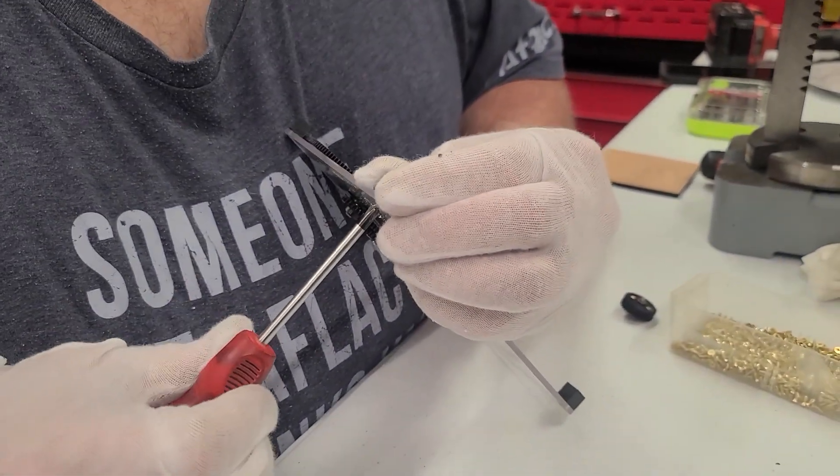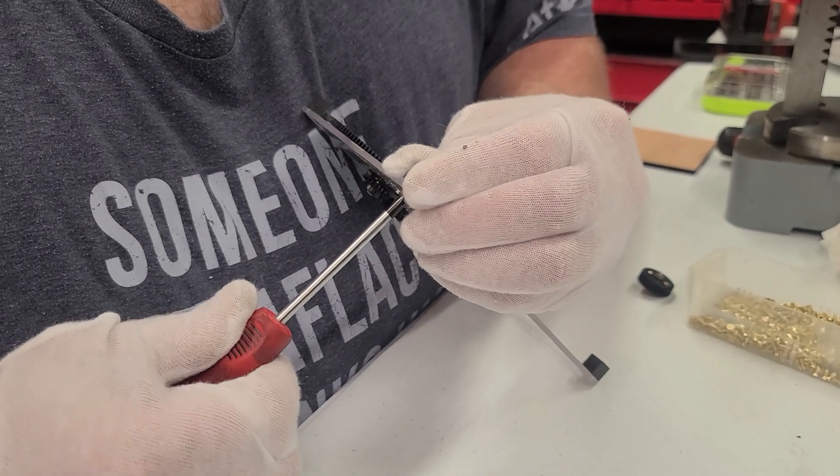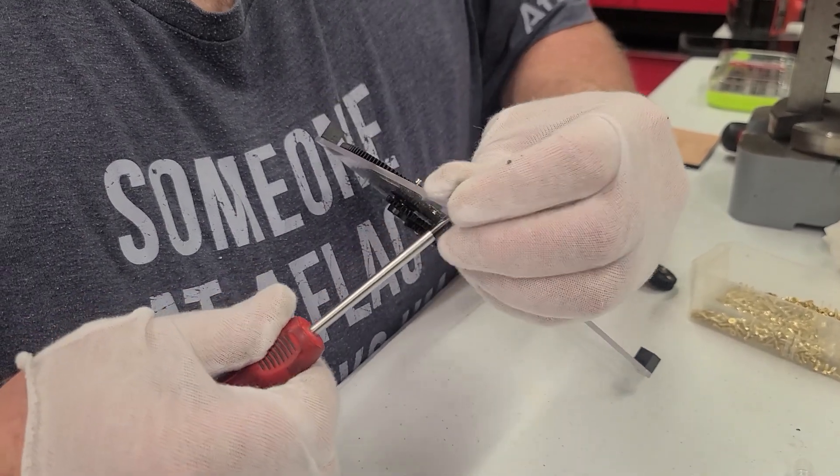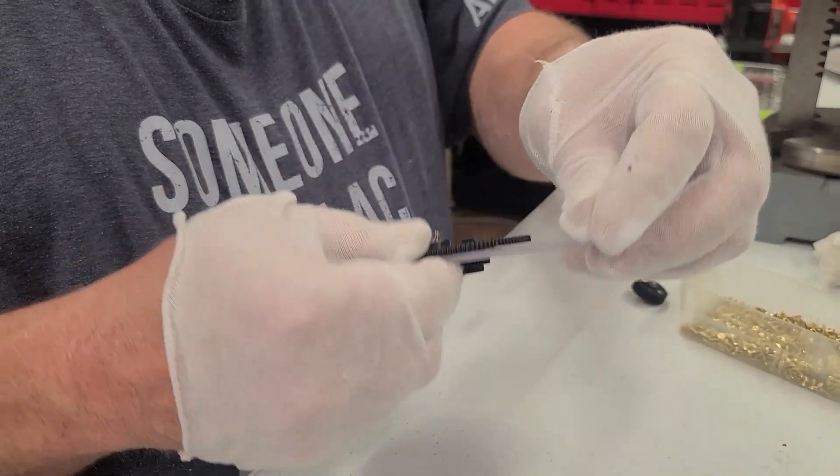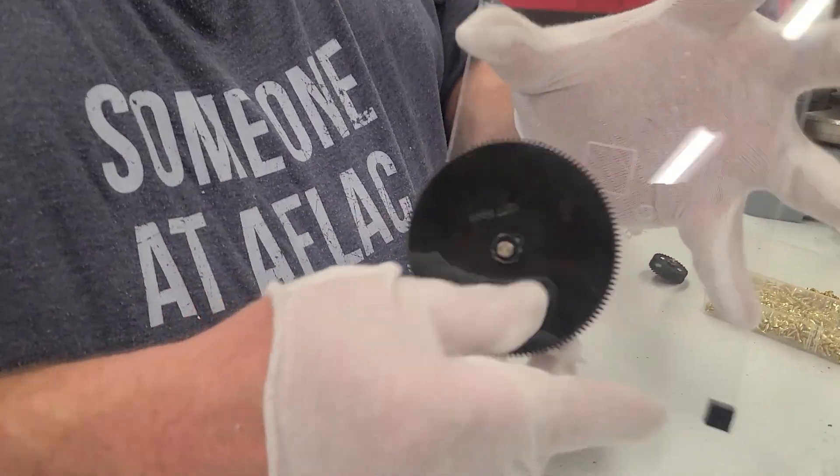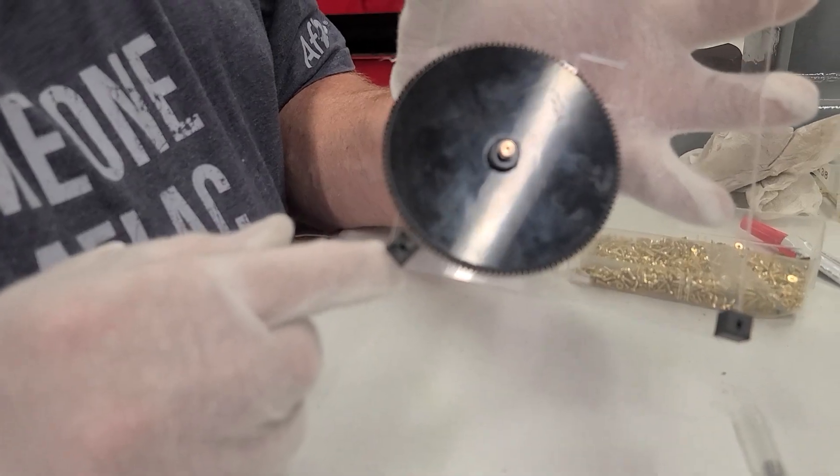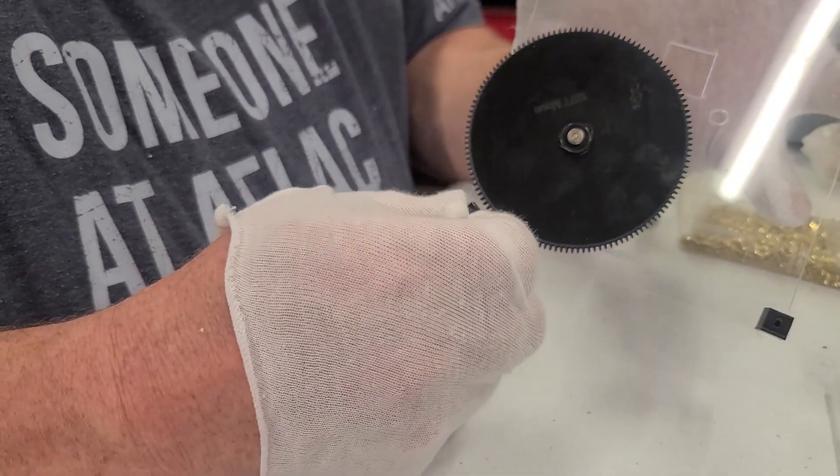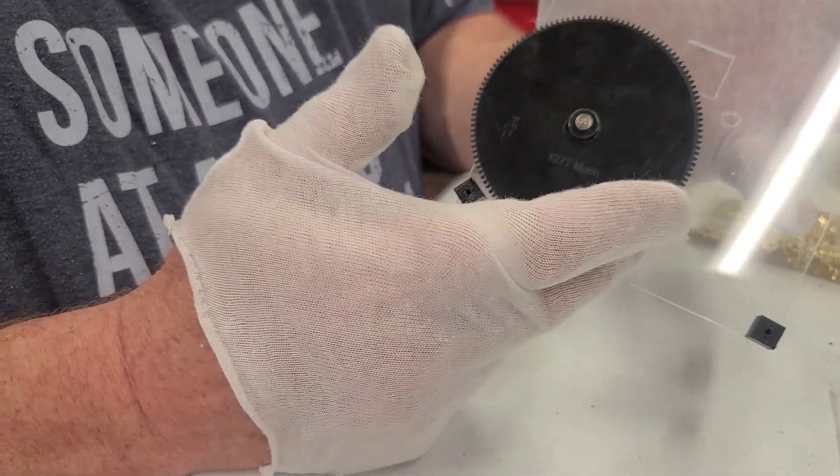Screw these little blocks on here that give us our space from the back plate. This one here you can put on in a diagonal or you can put it on straight. You may want to leave it diagonal to add extra space.